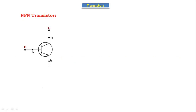In the NPN transistor, the emitter current direction is outside, and the base and collector current directions are inside. Based on the emitter current direction, we can determine whether it is an NPN or PNP transistor. If we apply KCL here — the sum of currents entering the node equals the sum of currents leaving the node — for this transistor, the entering currents are IB plus IC, equal to the leaving current IE.